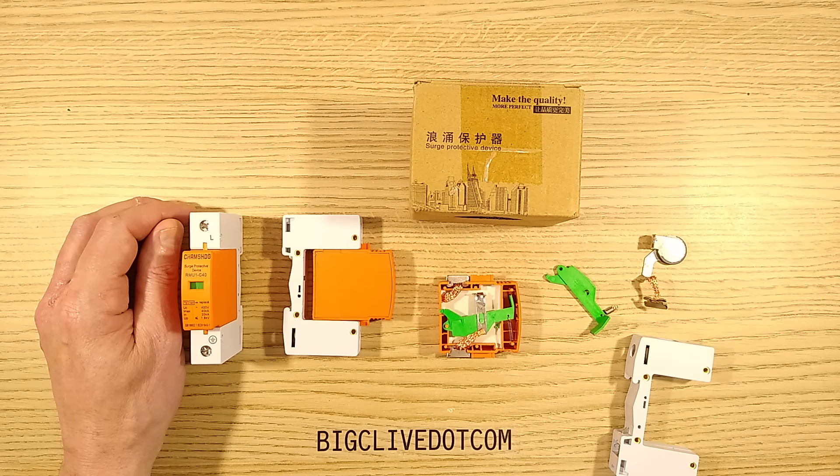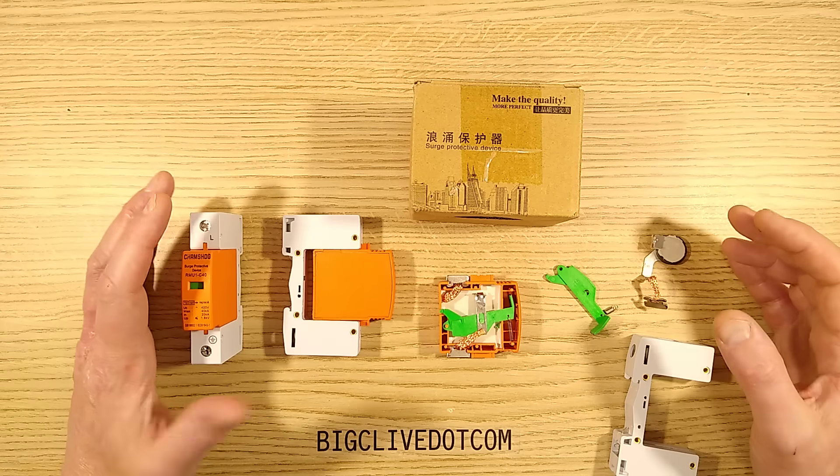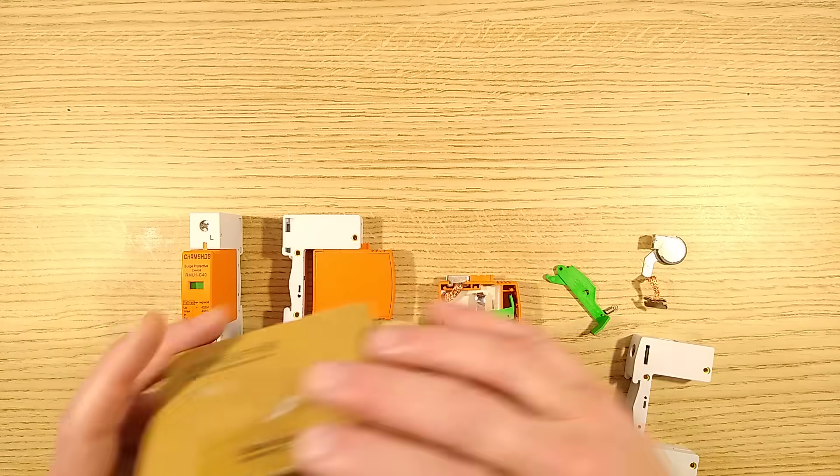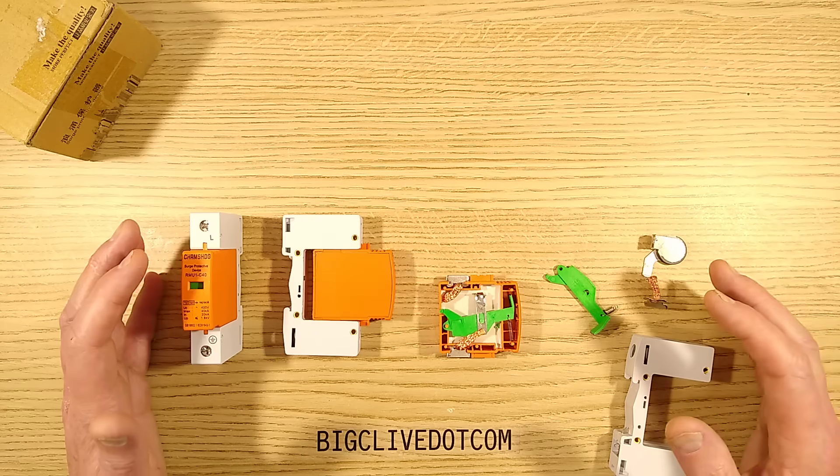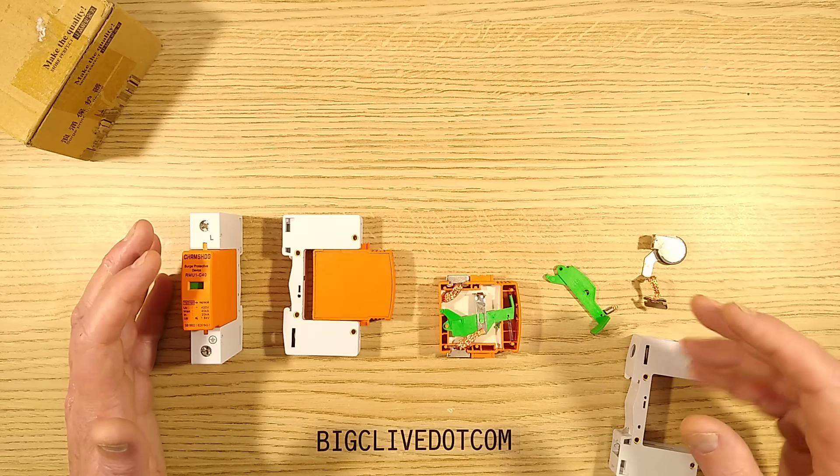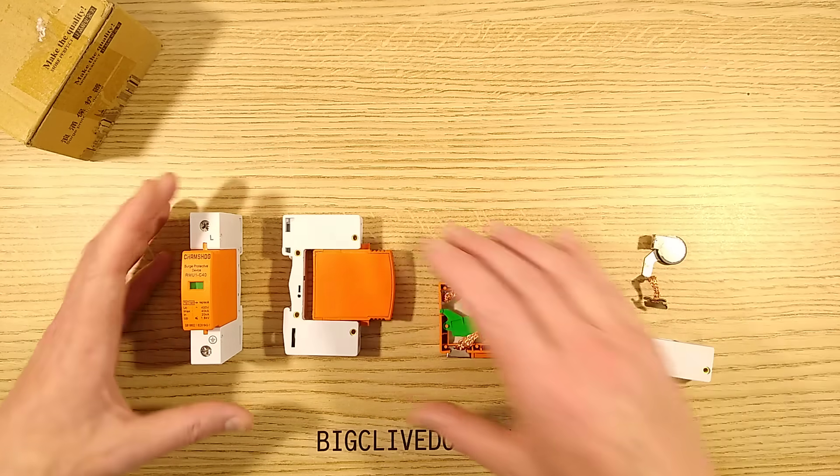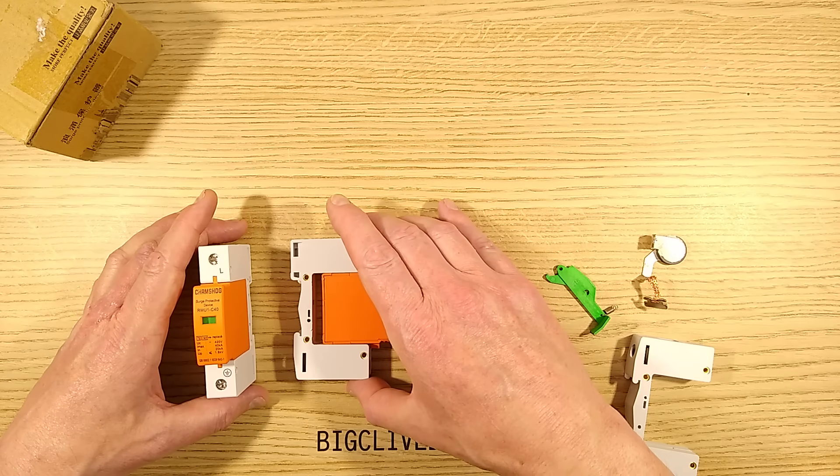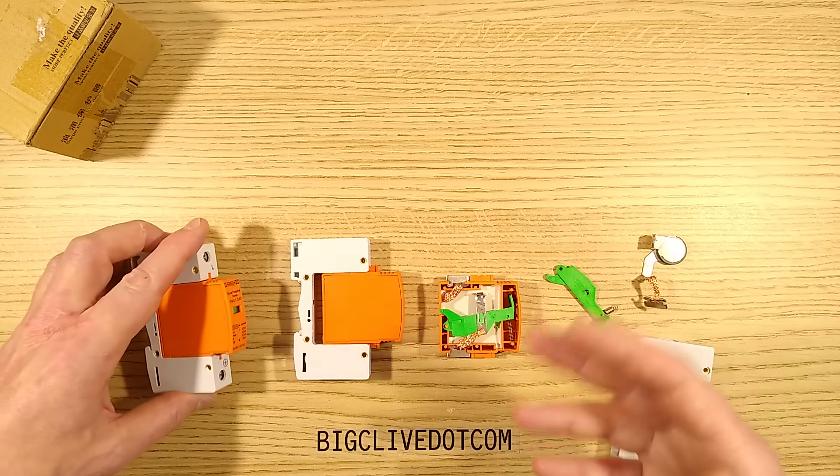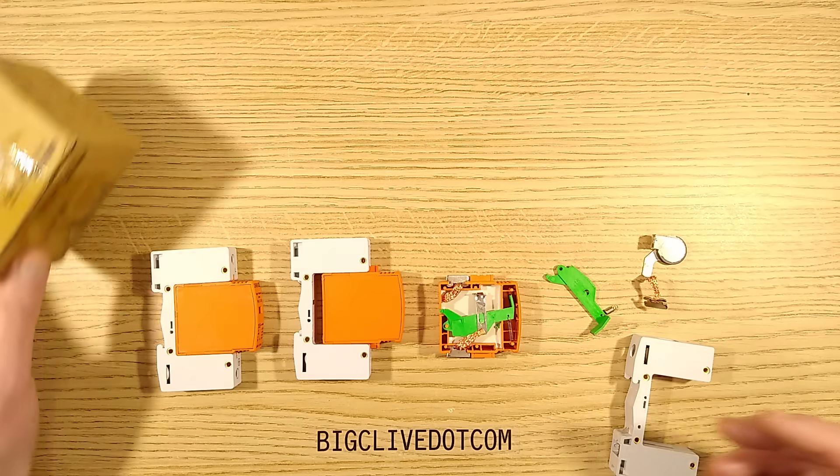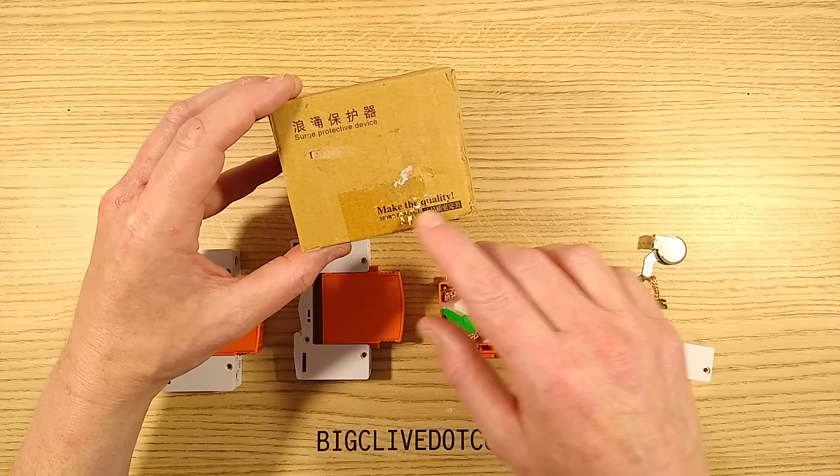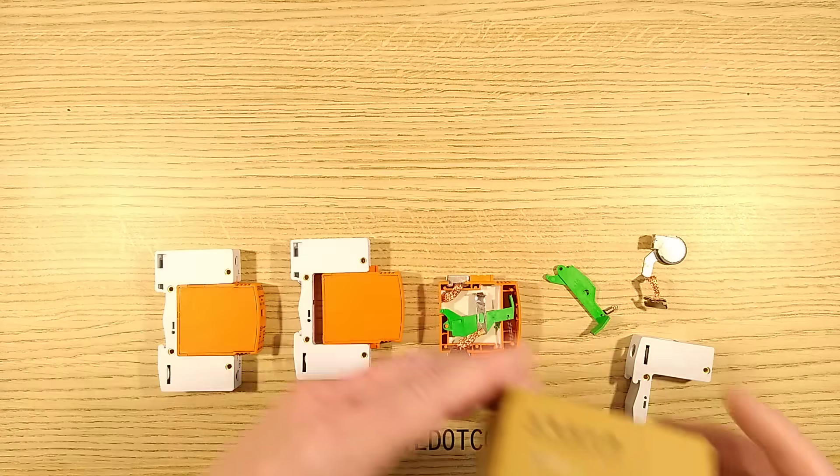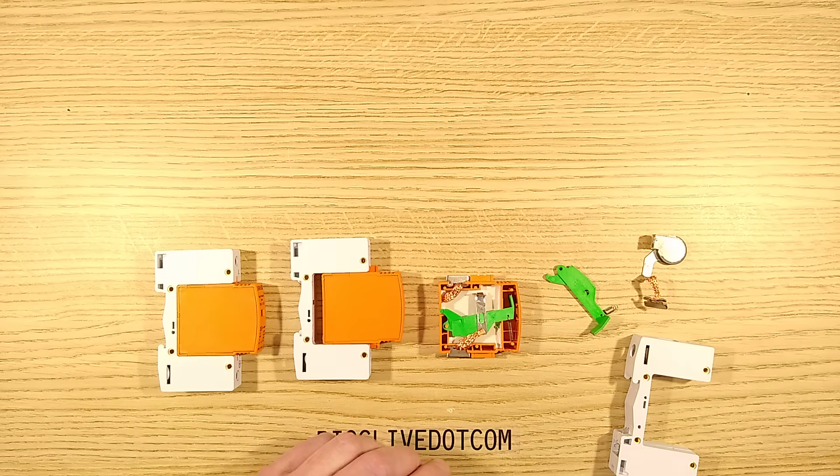I've looked at surge protective devices in the past before, and they were quite interesting. These are from eBay, and they were actually described as returns to a major online retailer. I'm guessing maybe that was perhaps Amazon, although I could be wrong. But they've obviously been recalled from that retailer and then dumped on eBay. It says make the quality more perfect in the box, and they have not made the quality more perfect.